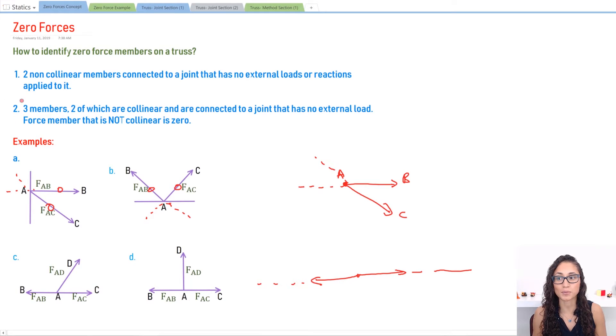Now if we look at concept number two, we have three members, and two of them are collinear like here and this one—they're on the same line of action and they're connected to the joint. Now all three members have to be connected to the joint and they have no external load or reactions. So the force member that is not collinear is going to be zero.